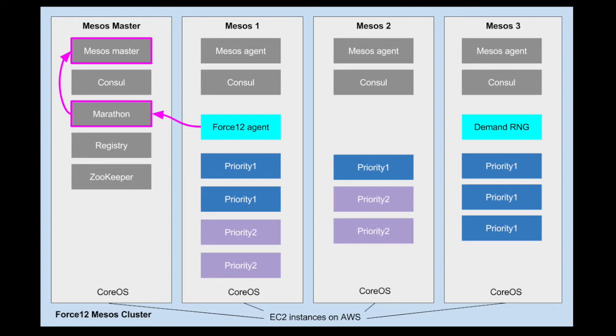When Force12 asks for a new container, Marathon calls the Mesos master, which decides which of the agent virtual machines it should run that container on.